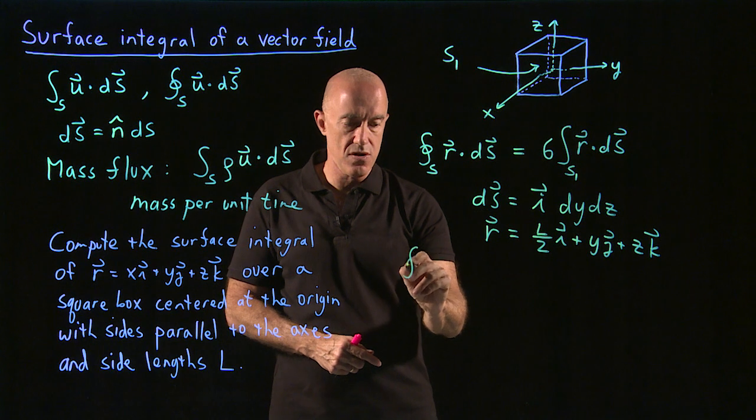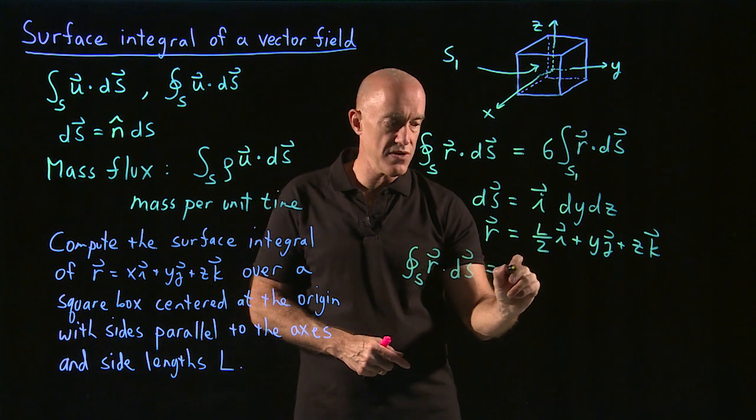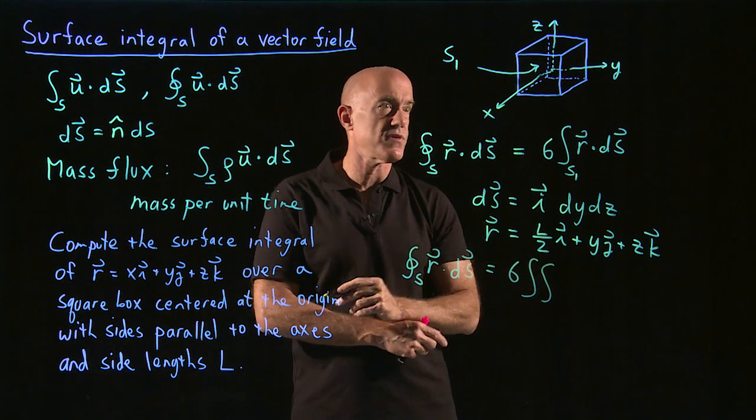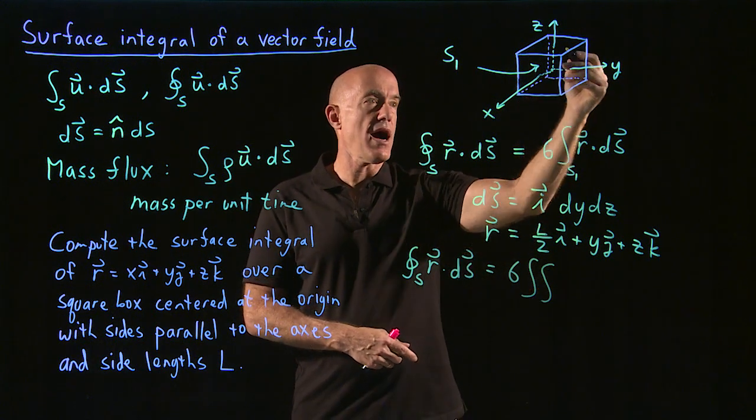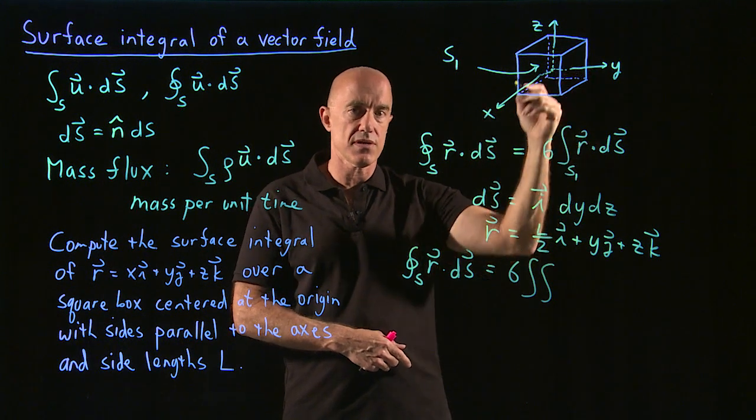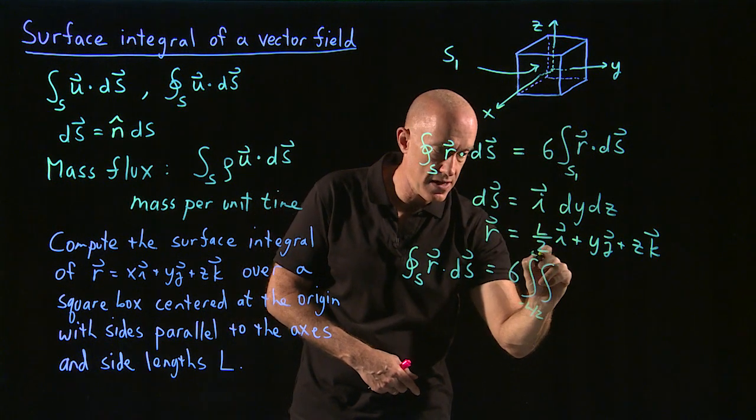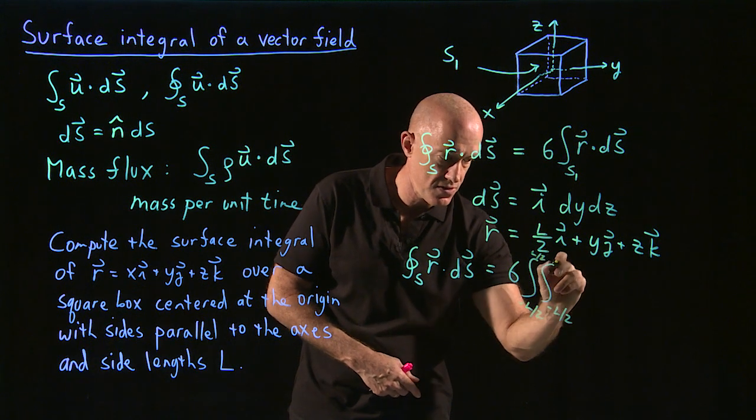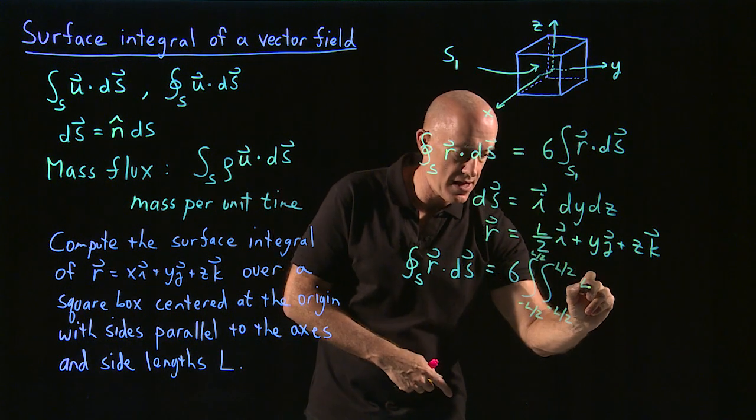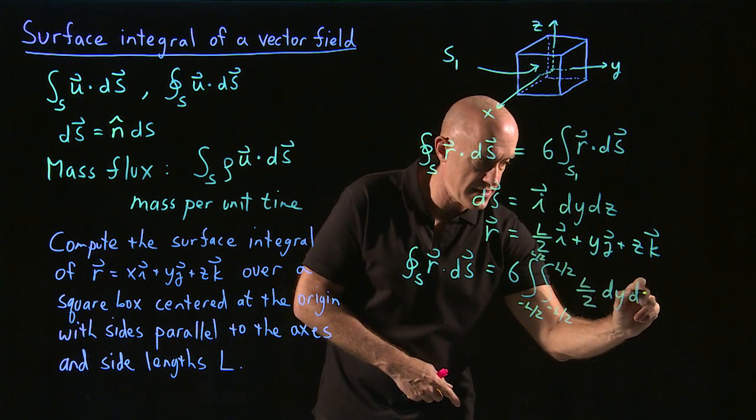So we get the integral over this surface of r dot ds is then going to be 6. And then we have to do a double integral over that surface face. Y and z both of them go from minus L over 2 to L over 2, because the origin is in the middle. So minus L over 2 to L over 2, minus L over 2 to L over 2. R dot ds will be L over 2. And then we have the integral here will be dy dz.